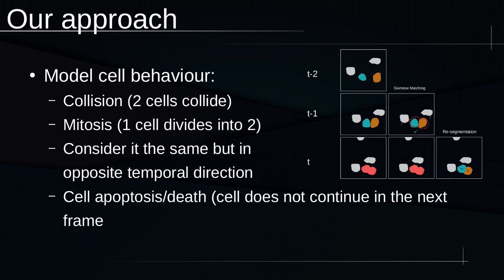What that looks like, we use collision which we define as two cells colliding and mitosis as one cell dividing into two, but these two events are considered the same but in opposite temporal dimension. These events help us identify an incorrectly segmented cell if we see that two cells are incorrectly segmented as one in the next or previous frame.